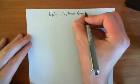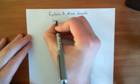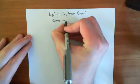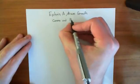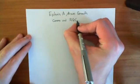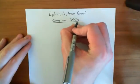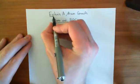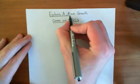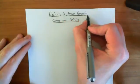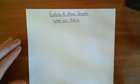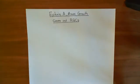Axon growth cones and retinal ganglion cells, which are usually abbreviated RGCs. You might be wondering what this is doing in a playlist on signalling with cyclic AMP, but what this pathway is going to make use of is oscillations in calcium, which then causes an oscillation in cyclic AMP.